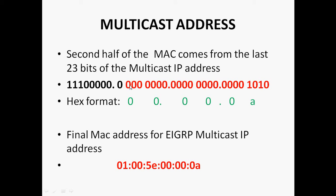Hexadecimal format means each character represents 4 bits. Here, this 0 indicates these 4 bits — the green color number 0 represents 4 bits. So grouping the last 23 bits into sets of 4 bits, you convert each group into its corresponding hexadecimal character.